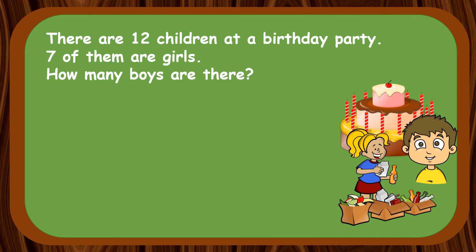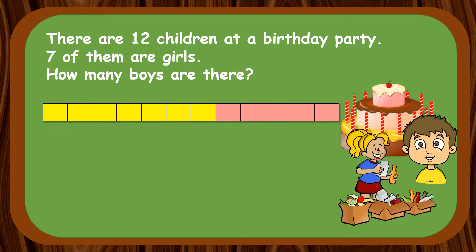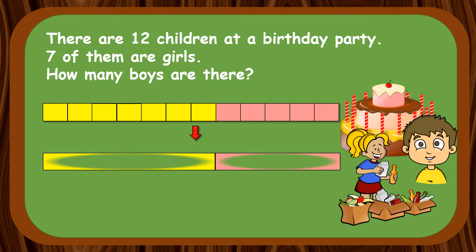There are 12 children at a birthday party. Seven of them are girls. How many boys are there? Let's draw the model to show the relationship between the number of boys and the number of girls.